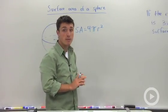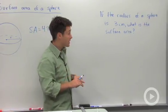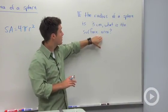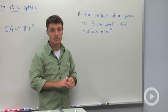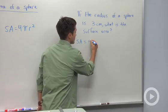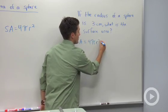Let's look at a very basic example of this application. If the radius of a sphere is three centimeters, what is the surface area? Well, we'll start off by writing our surface area formula. Surface area equals four pi r squared.